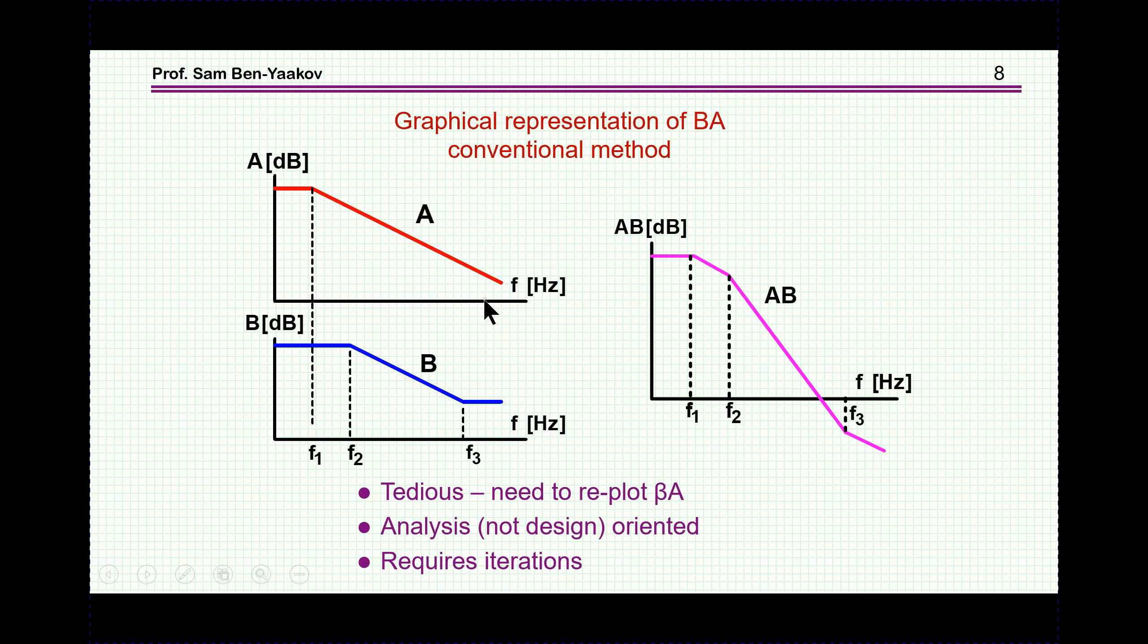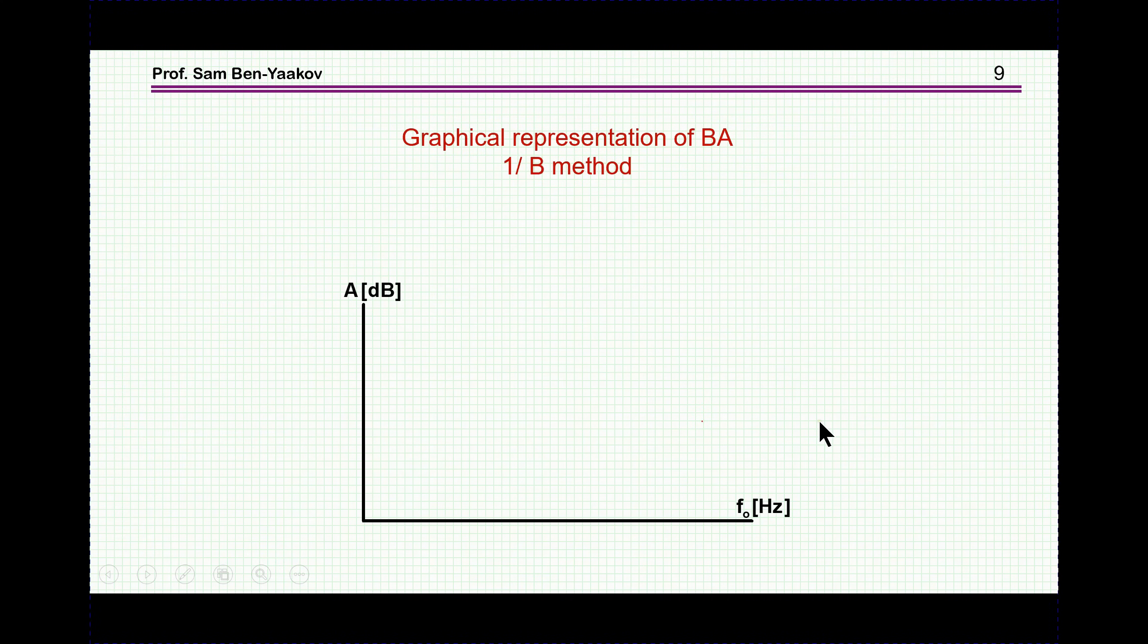Now, there are two ways to go about the design in terms of plotting the Bode plot. One is this conventional way in which you start with the plant, then you draw the controller that you wish to have, then you combine the two, and then you look here at the crossover and the phase here. What I would like to recommend, that I've been using for many years now, is a different way, which is much more convenient. That is, using the 1 over B, or 1 over controller graph method. Here, we start with the plant, this is the plant itself, and then we are not doing anything with it, we are leaving it as it is, but drawing here the 1 over B, the 1 over the controller.